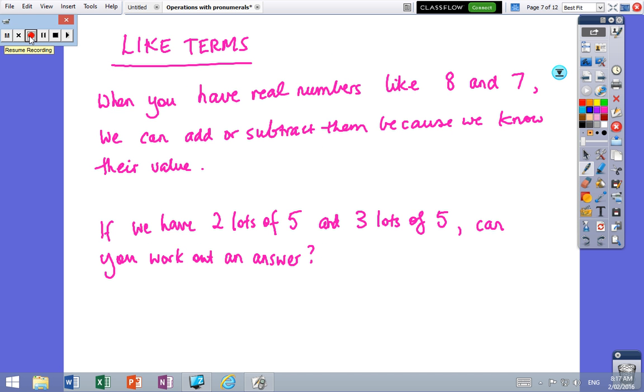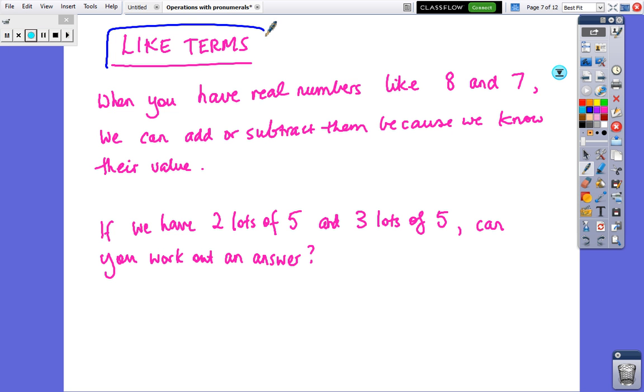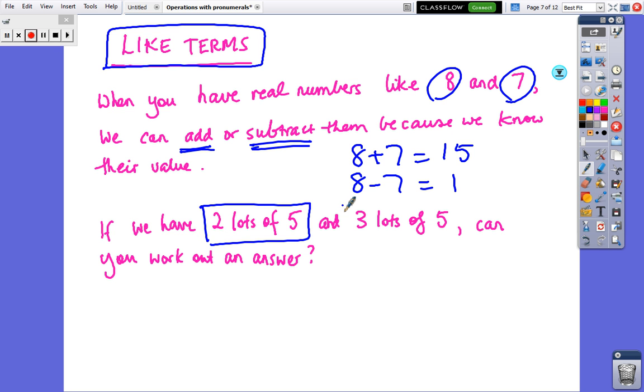So let's look at like terms, which is a really critical thing in this whole part of the topic. When we've got numbers like 8 and 7, we can add and we can subtract because we know that they are - 8 plus 7 we know is 15, 8 minus 7 we know is 1. So can we do this if you've got 2 lots of 5 and 3 lots of 5? Can we get an answer? Have a go at that one and when you come back live...